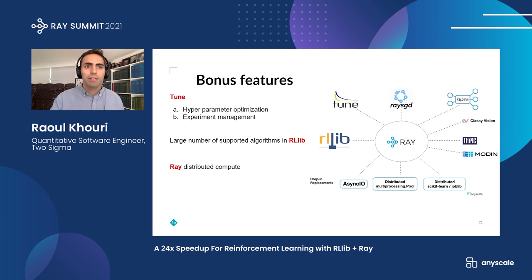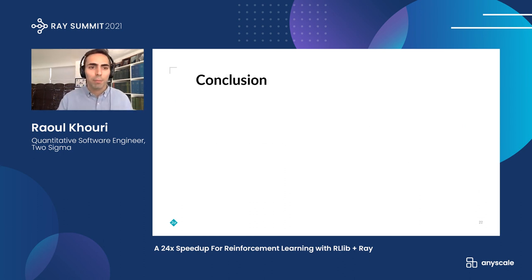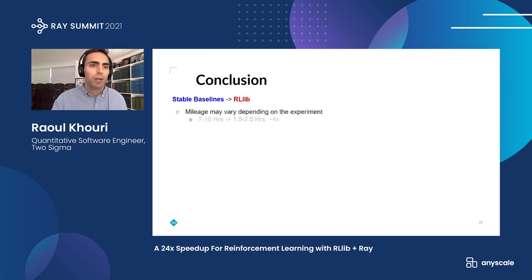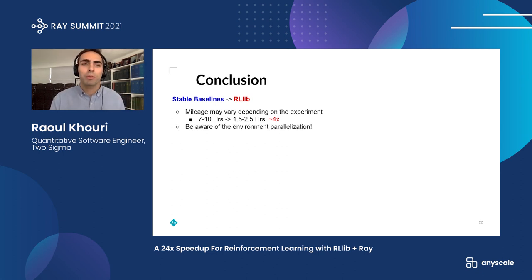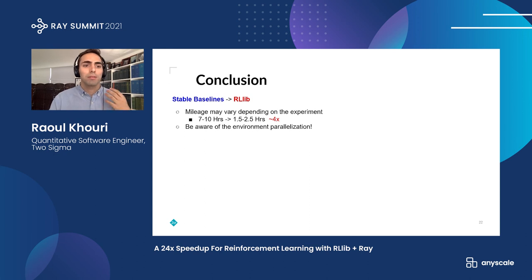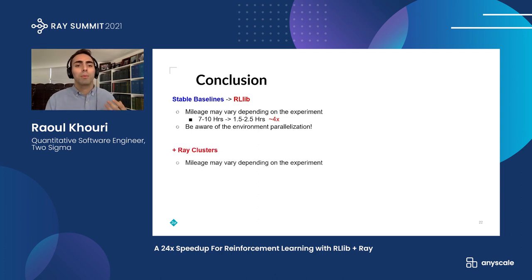In conclusion, migrating from stable baselines to RLLib — mileage is going to vary depending on your experiment, especially how much the lockstep issue matters. We were able to get a 4x speedup; most people will probably get something around 10% to 50% speedup, which is closer to what RLLib boasts on their website. You really need to be aware of the environment parallelization you're using — are you using vectorized or batched? Is the lockstep issue going to get you? We weren't originally aware of it on stable baselines, but now with RLLib and this investigation, we definitely are — 24x speedup will do that.